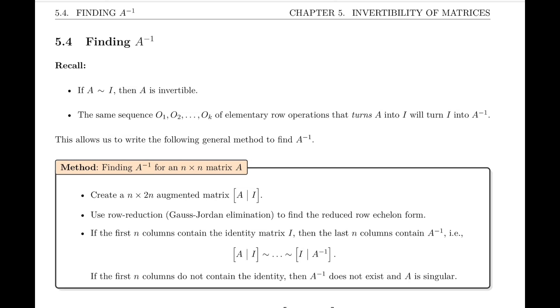You'll recall that if A is row equivalent to I, then A is invertible. The method hinges on this fact. We also mentioned that the same sequence of elementary row operations that turn A into I will turn I into A inverse, I being the identity matrix.